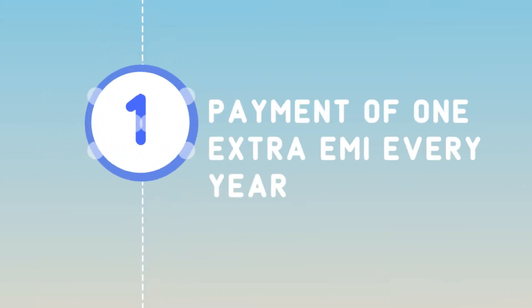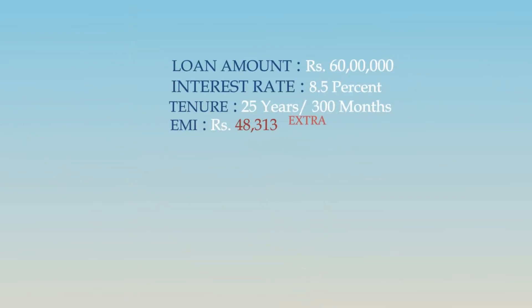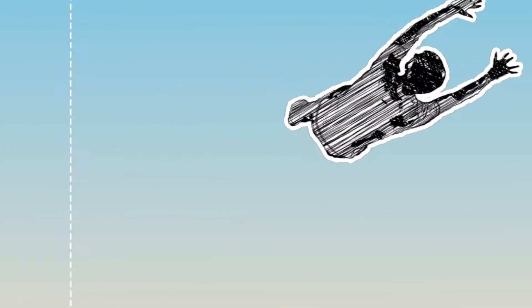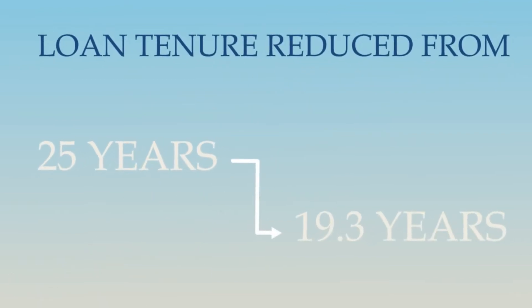Number 1: if Charlie pays 1 extra EMI per year — that is 48,313 rupees extra — and continues to do this every year, then the tenure of his loan will decrease from 25 years down to 19 years and 3 months.